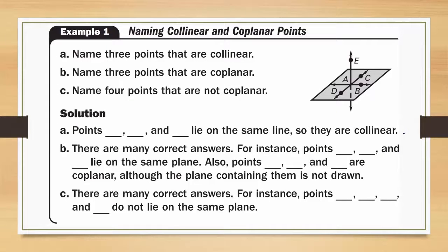Let's take a look at example one, naming collinear and coplanar points. A, name three points that are collinear. Remember collinear means they are all on the same line. Points D, A, and C lie on the same line so they are collinear.